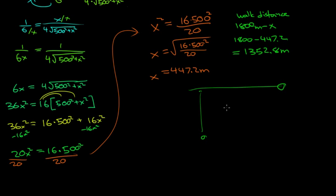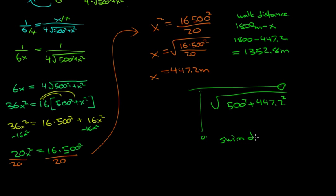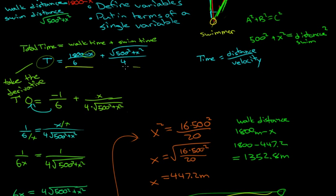Our swim distance was the square root of (500 squared plus 447.2 squared), which equals 670.8 meters. So this is the shortest route to get from where that swimmer is to the cottage. All we have to do is break it down into a function of walk time plus swim time, find the derivative, solve for zero, and then we have our shortest route.